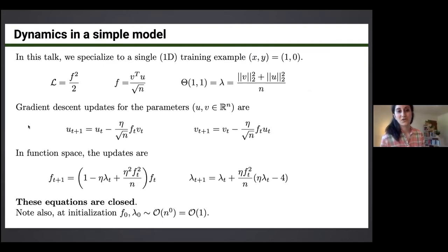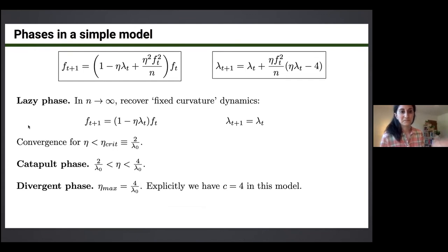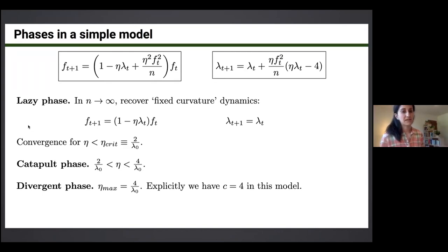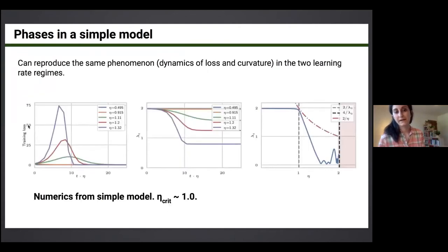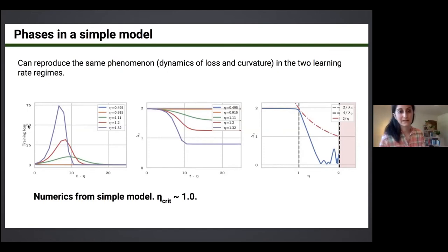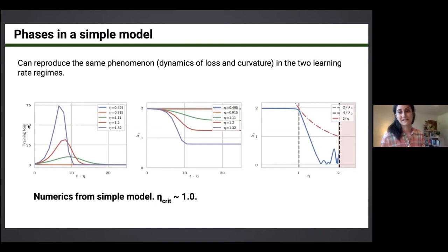I'll skip over part of the paper to save time. The core theoretical contribution is explaining these observations with a simple, elegant model from a single hidden-layer neural network. For those interested in dynamical systems: you analyze two coupled discrete update equations for two scalar variables f and lambda, and you can recover the existence of both phases. The numerics from this two-variable dynamical system closely match empirical results for wide ResNet and other models. Eta max has the form C over lambda naught where C is exactly 4 in this theoretical model.